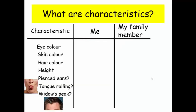So your first task is to copy this table into your book or onto a piece of paper and write down your characteristics for each of these things and the characteristics of one of your family members. Choose someone who you are at home with at the moment.